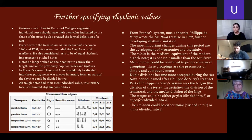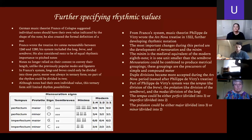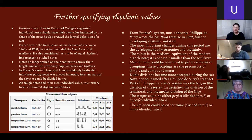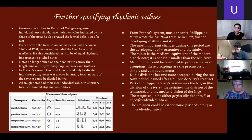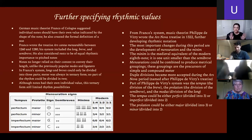From Franco's system, the music theorist Philippe de Vitry wrote the Ars Nova treatise in 1322, taking Franco's system and changing it further. The biggest changes he added were the development of mensuration and the minima. The minima is the medieval equivalent of an eighth note — one value smaller than the semi-breve. Mensurations could be combined to produce metrical groupings — essentially the beginning of time signatures — and the start of having simple versus compound meter, like three-four or six-eight. Duple divisions became more accepted during the Ars Nova period, so the superstition against twos calmed down and both twos and threes became acceptable.